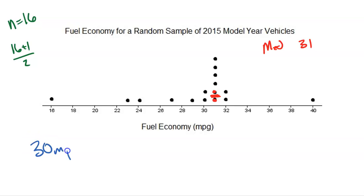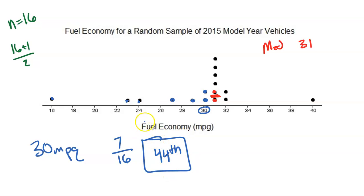If a car has 30 miles per gallon, what's its percentile? I count every car at or below 30 miles per gallon: 1, 2, 3, 4, 5, 6, 7. Seven out of the 16 cars are at 30 or below. Seven divided by 16 — rounding to a whole number — gives the 44th percentile. So 44% of cars in this sample are at 30 miles per gallon or below. All I had to do was count. The calculator gives 0.4375, so we say the 44th percentile. So 30 miles per gallon is just below the median, in the bottom half at the 44th percentile.